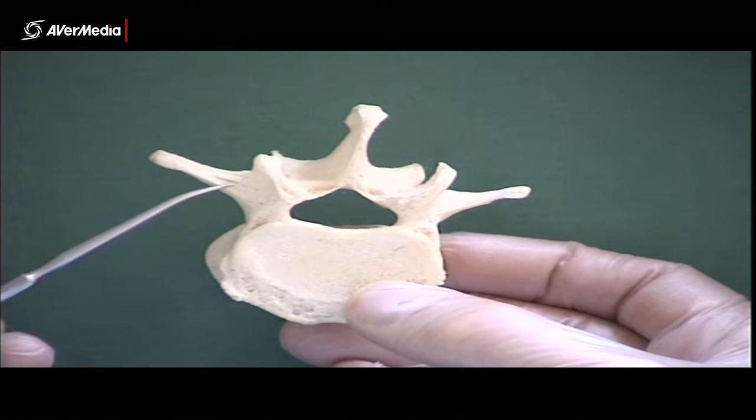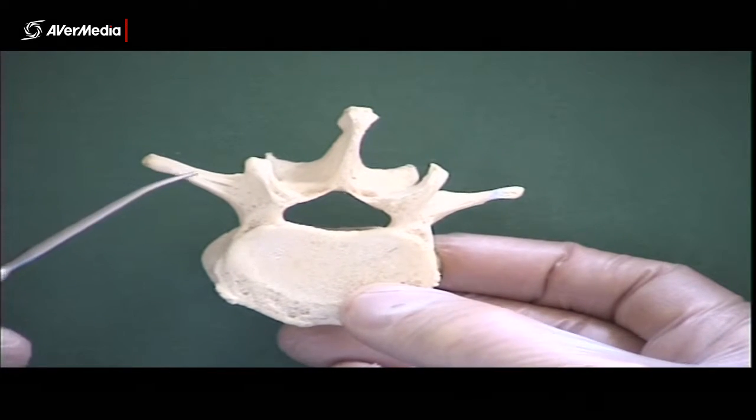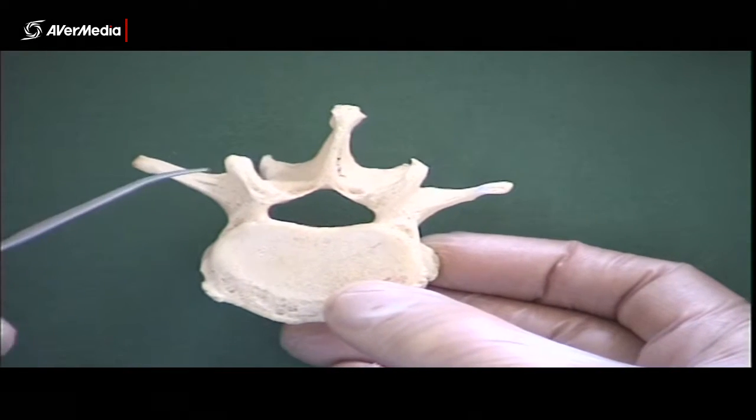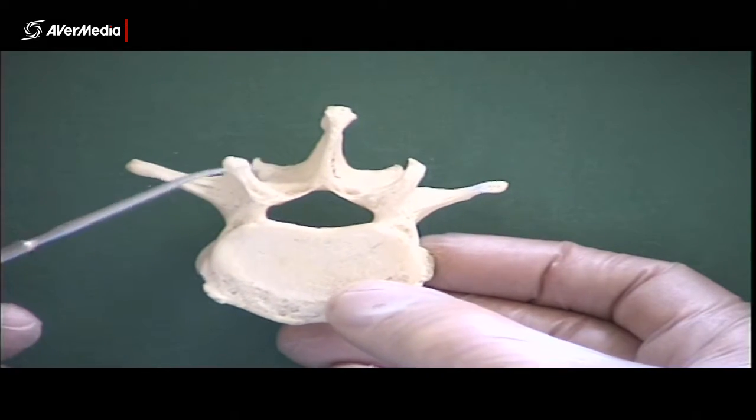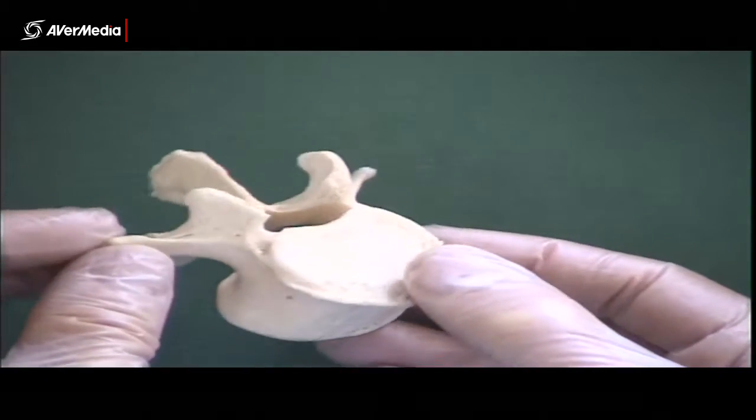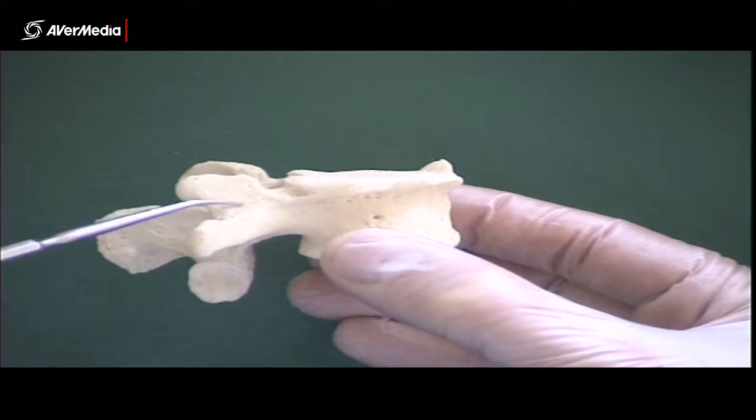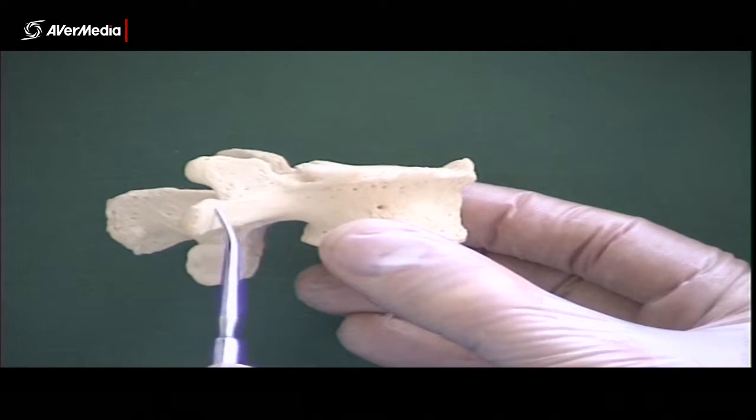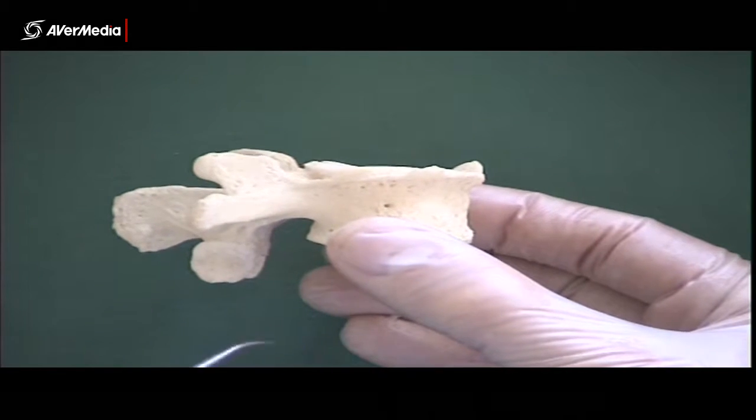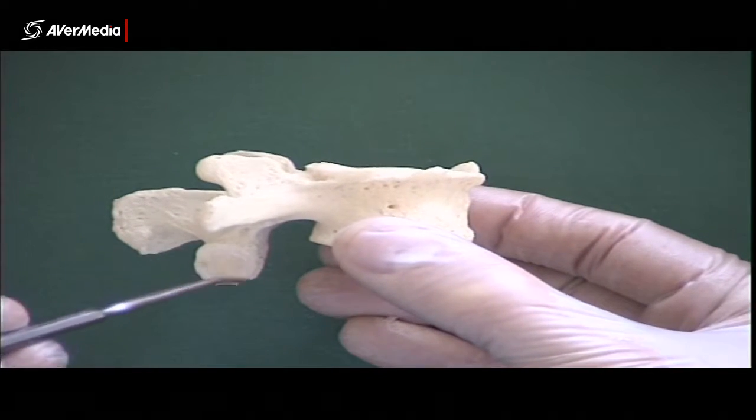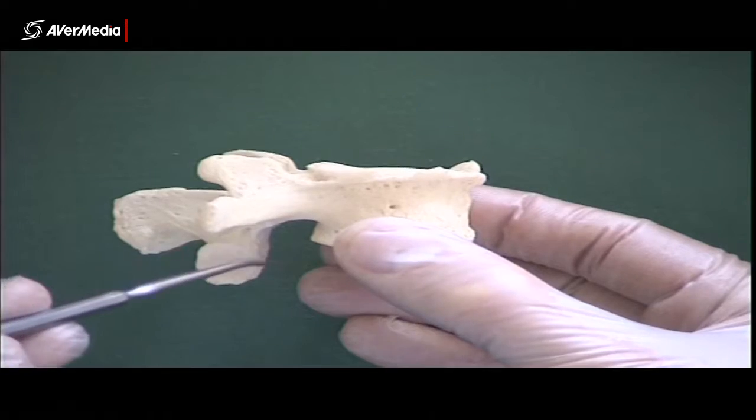And then coming off the pedicle, we have the transverse process, and then we have another process that's protruding superiorly. So it's better to see that from a lateral point of view. So there's the superior articular process. Here's the transverse process just under it. Then this one here must be the inferior articular process.